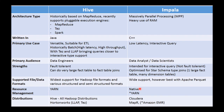Impala, on the other hand, historically did not rely on YARN — it had its own native capabilities to manage resources. However, recent work on Impala is showing signs of it integrating well with YARN. When you have a hybrid environment with both Impala and Hive running in the same cluster, not having the same resource manager makes it a challenge to coordinate resources like RAM.